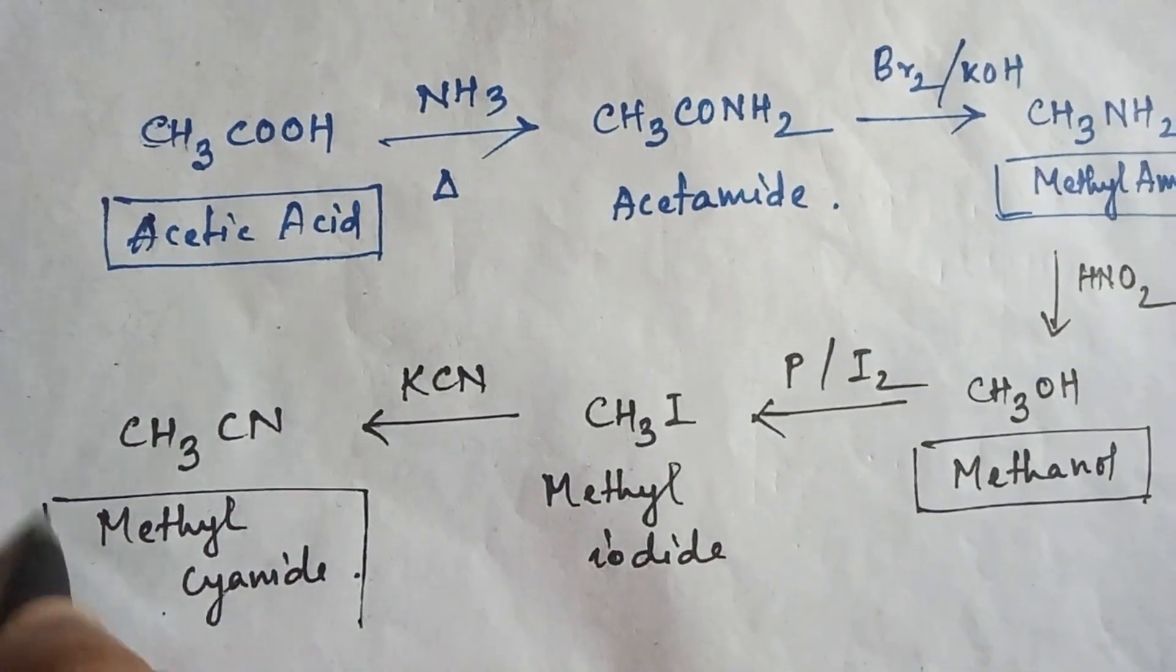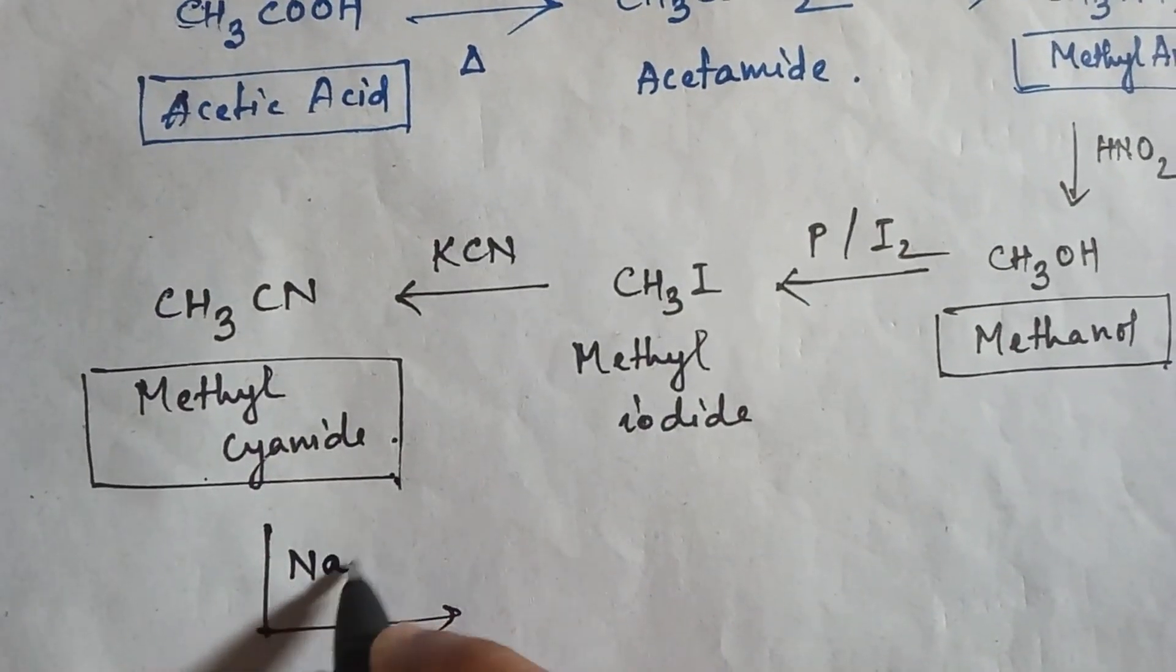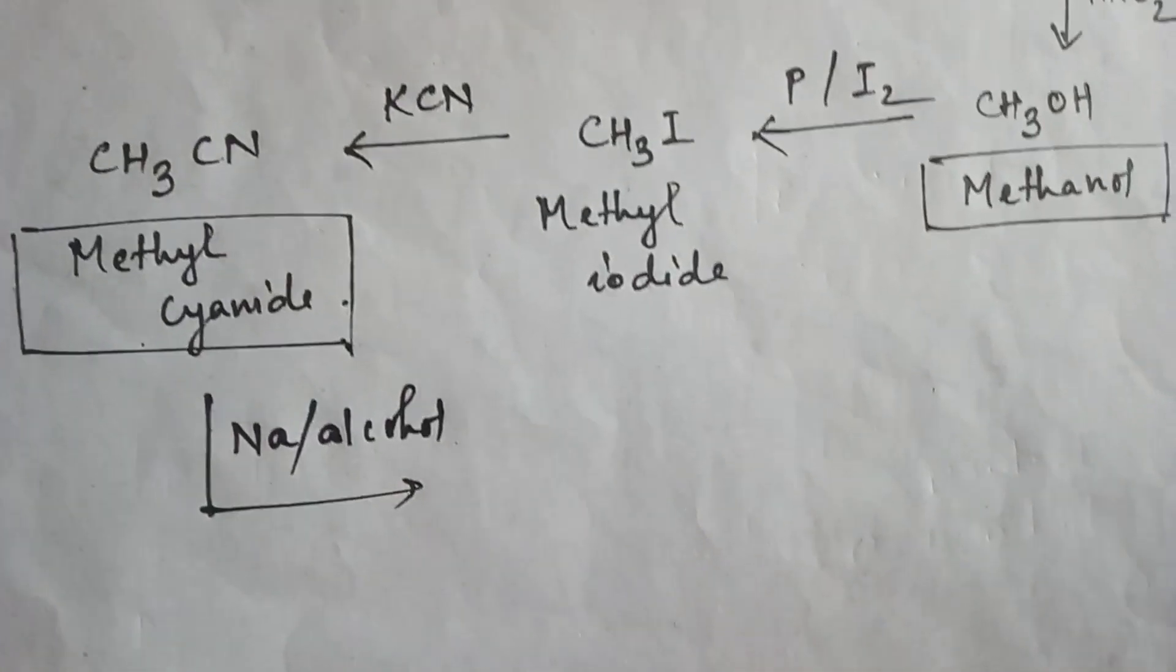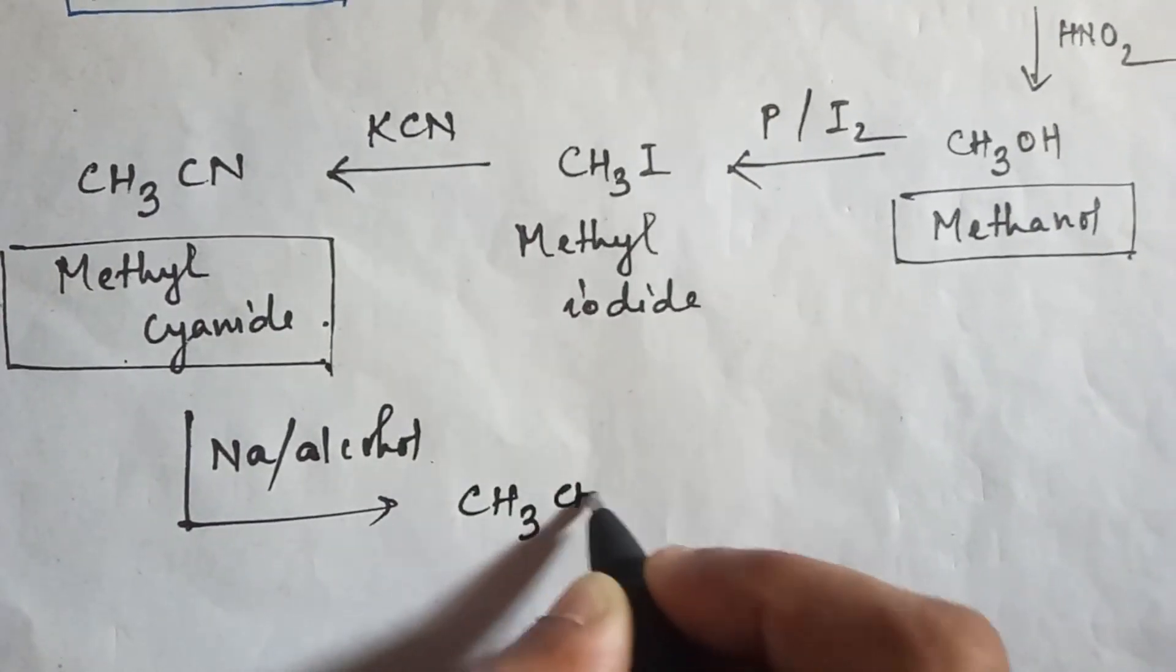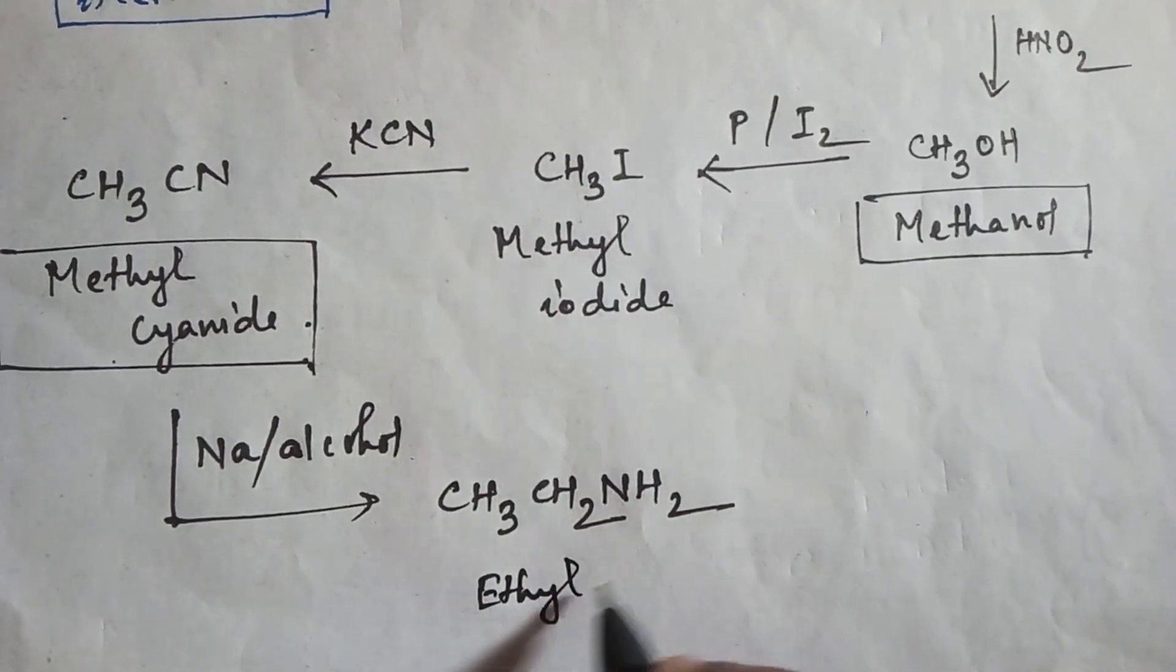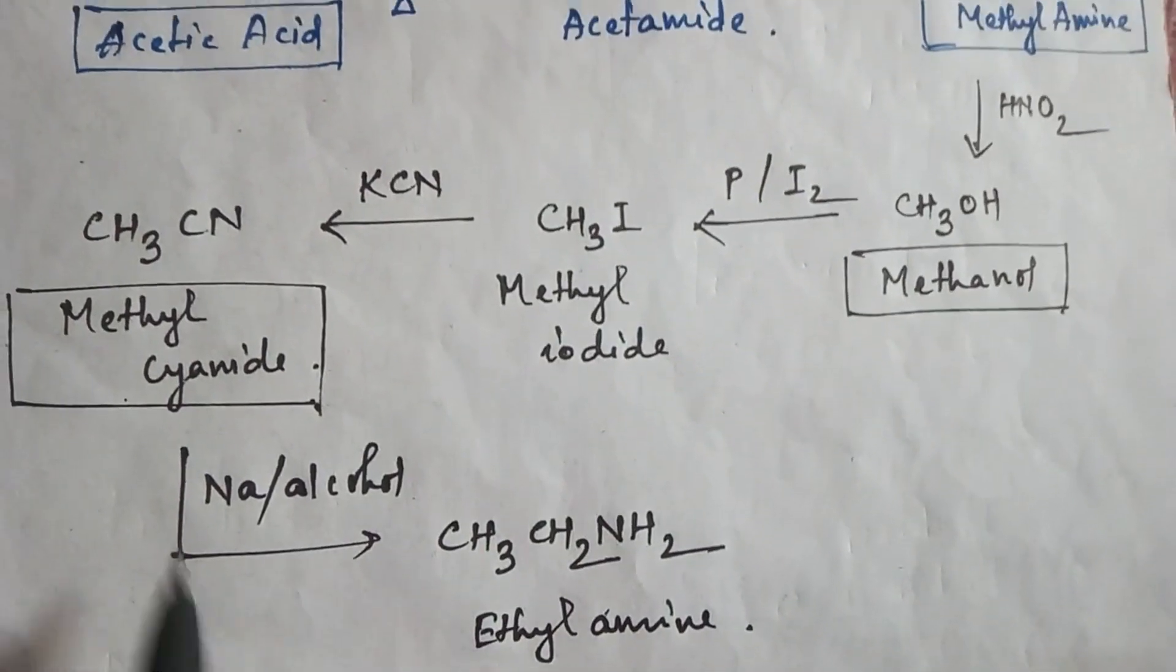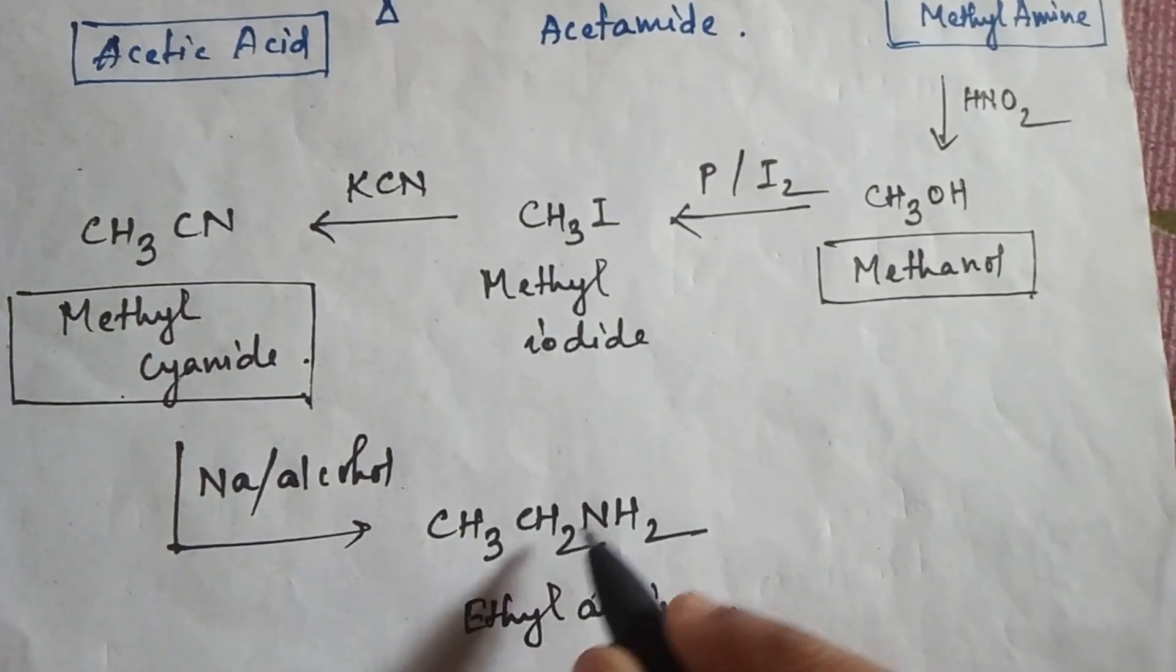Now in methyl cyanide, if you apply sodium and alcohol, then reduction will happen and the product will be CH3CH2NH2, that is ethyl amine. Now you can see one carbon atom increased from here to here.